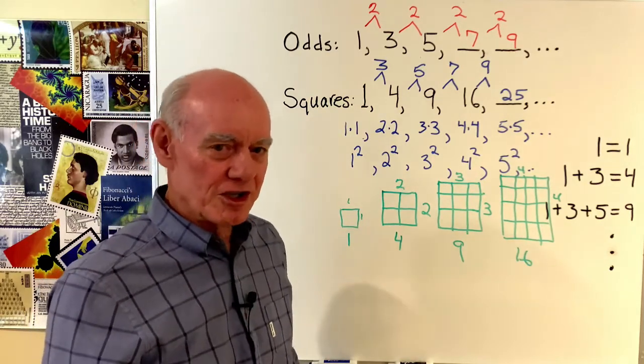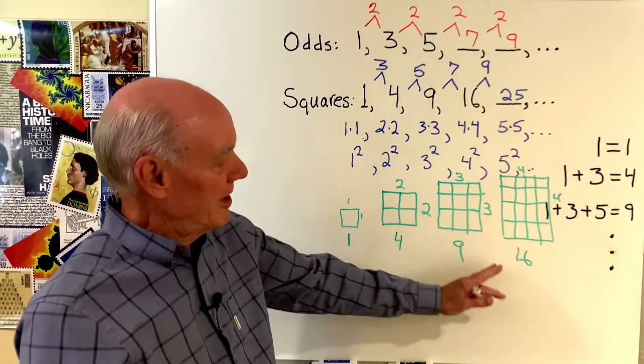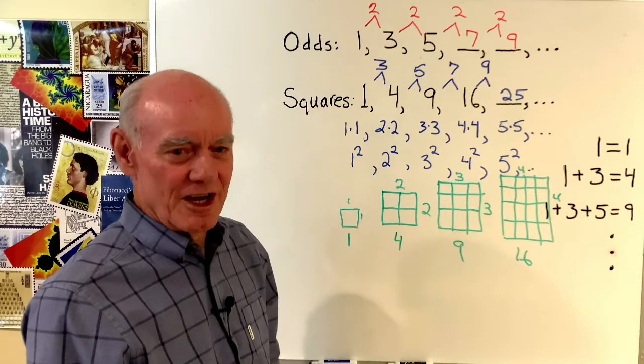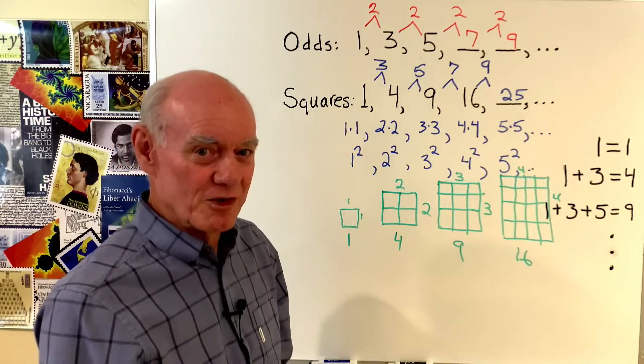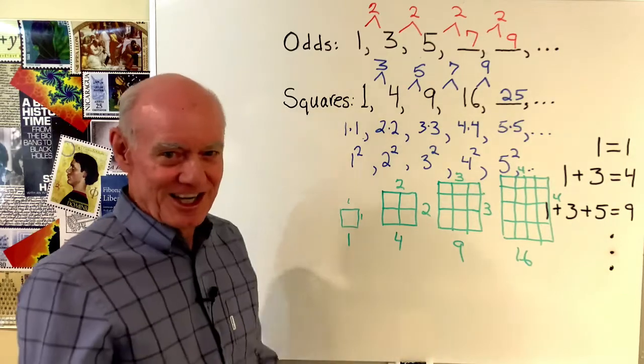So you might be more artistically inclined and think of this in a geometric way. Well, if you do that, you can see that the next step right here would be a square with 25 little squares in it, five on each side. Now, let me show you something else I kind of like with this.